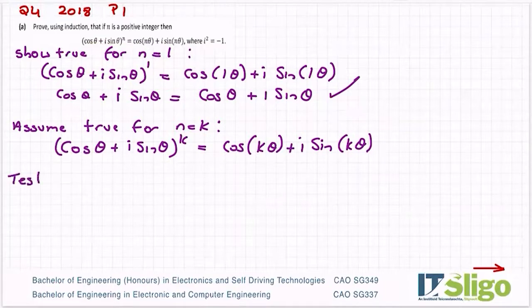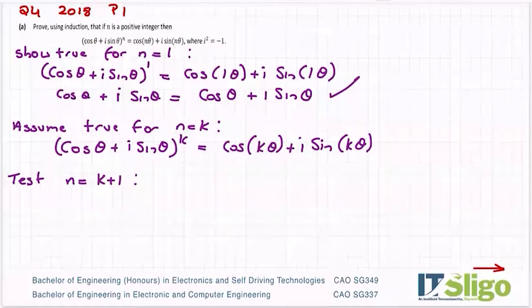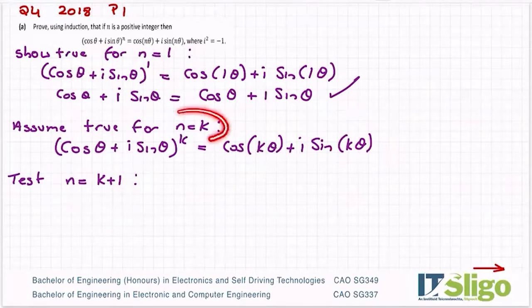The third step, test the case where n is equal to k plus 1. In other words, is this true for the case where n is equal to k plus 1? So if we assume true for any random number k, can we show that it's also true for k plus 1?